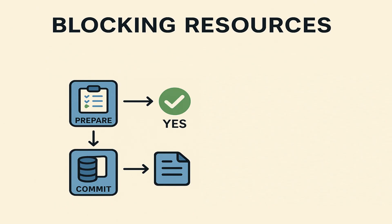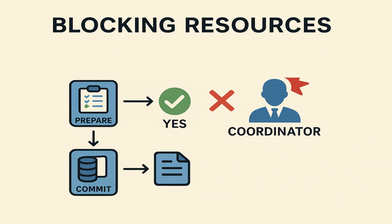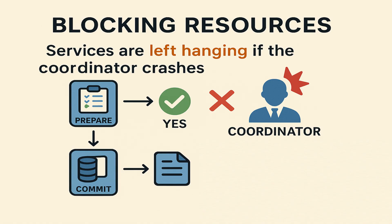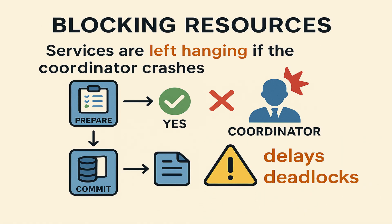The biggest issue is blocking. Once a service replies yes in the prepare phase, it must lock some resources and wait for the final commit or rollback command from the coordinator. If the coordinator crashes in the middle of the process, the services are left hanging — not knowing whether to commit or rollback. During this time they hold locks on their local resources, which can cause huge delays or even deadlocks in high-traffic systems.